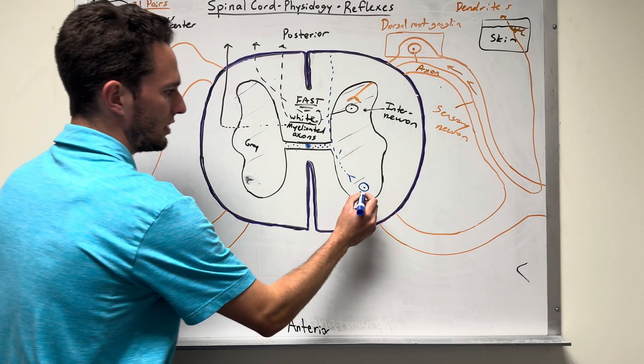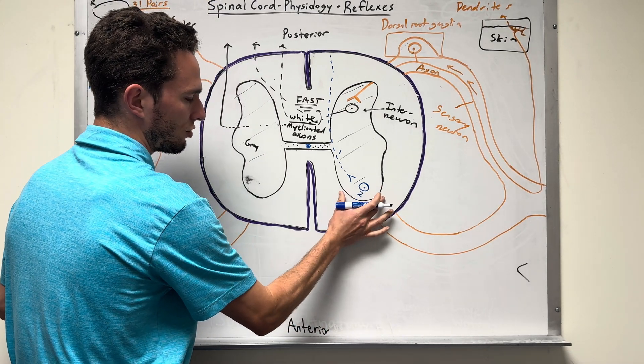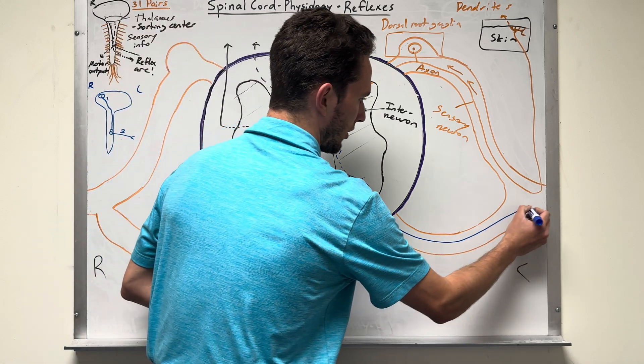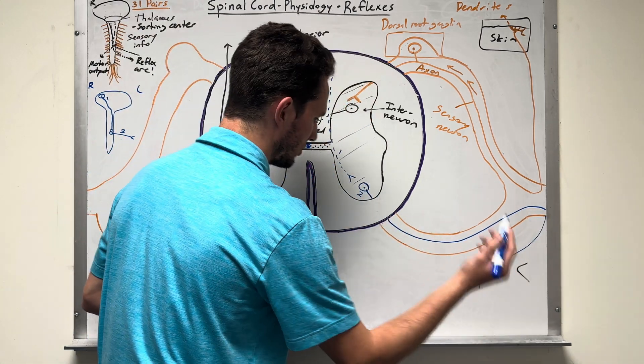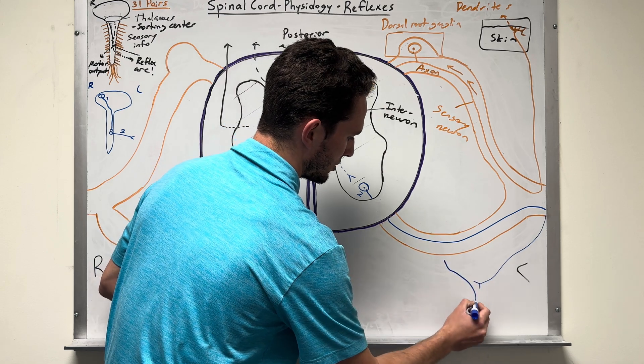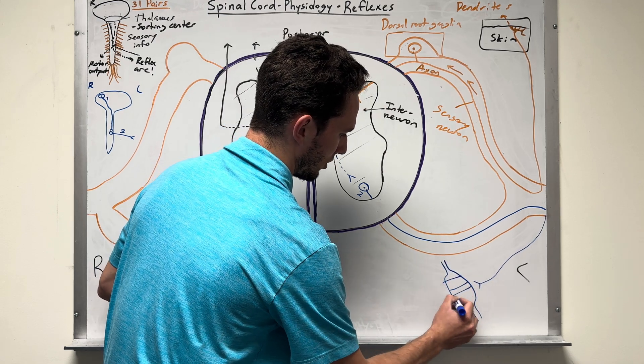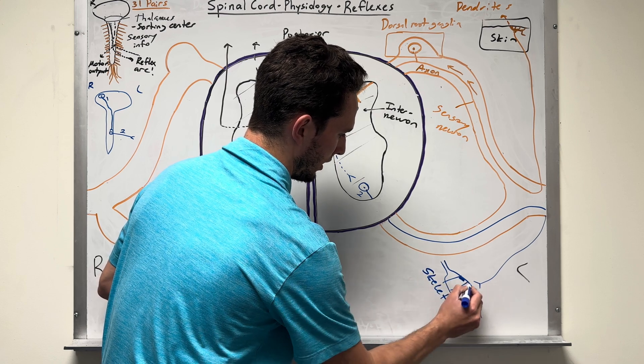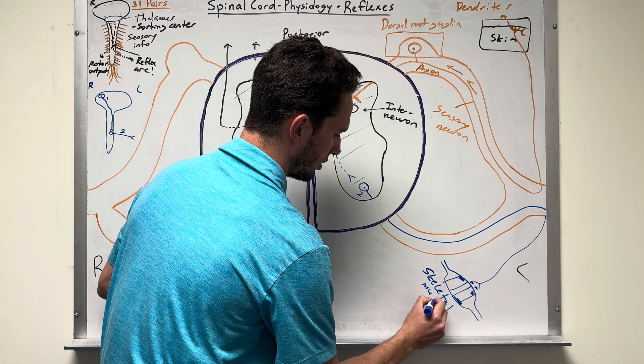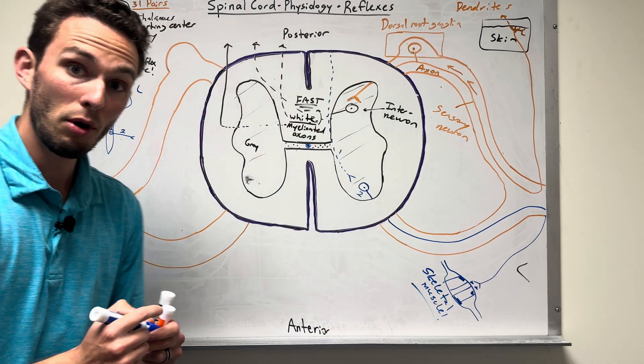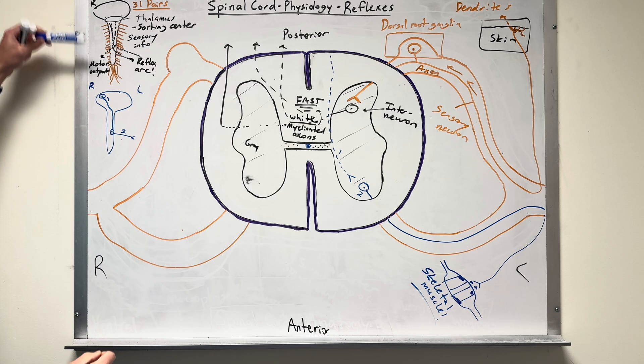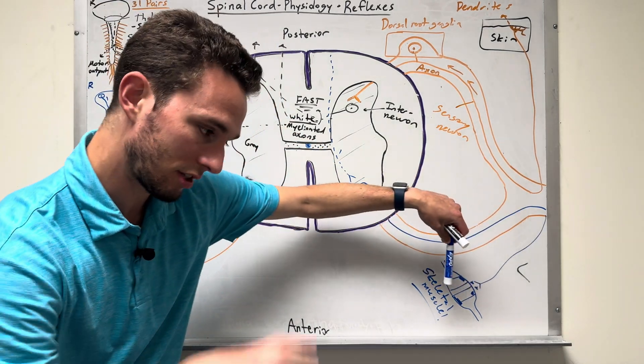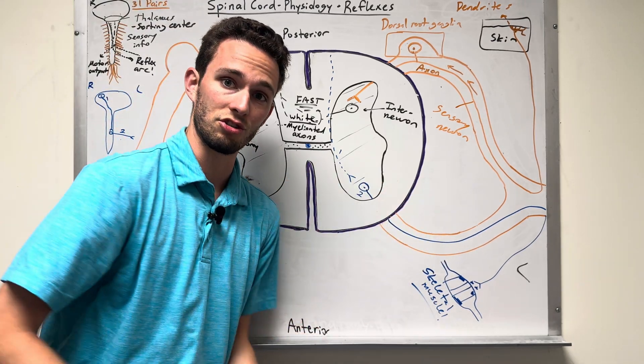So we're eventually going to have this lower motor neuron in the ventral horn of the gray matter travel out the ventral root of the spinal nerve, and it's going to come and talk to, we'll say in this example, skeletal muscle fibers. Skeletal muscle fibers, multinucleated, and it's a skeletal muscle, and it will stimulate it to contract.